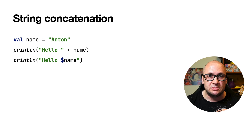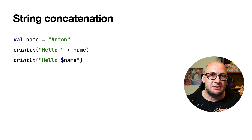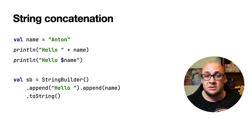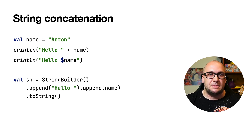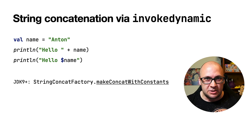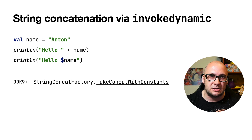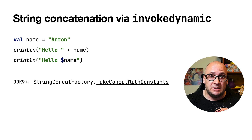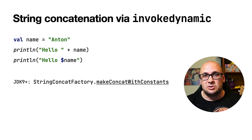String concatenation is a popular operation that we use in our programs. In Kotlin, using string templates results in the same bytecode as if we are joining the strings using the plus operator. In the bytecode for these operations, we will actually see the use of the StringBuilder class and the sequence of append methods. In JDK9, string concatenation was optimized by using the invokeDynamic bytecode instruction. For this purpose, the StringConcatFactory class with utility methods was introduced. Kotlin 1.5.20 compiles to bytecode that takes advantage of this JDK feature.